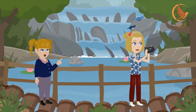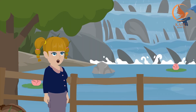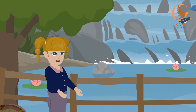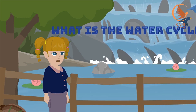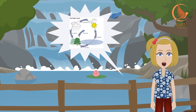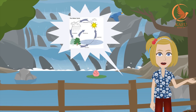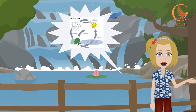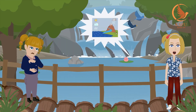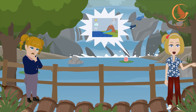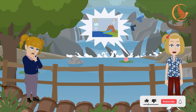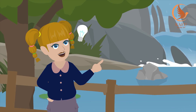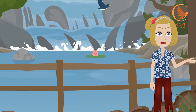Coco asks Mia: if rain is formed when water evaporates from rivers or oceans, does the amount of water decrease? Mia explains that the amount of water in oceans and rivers does not decrease because of the water cycle. Water evaporates from seas and oceans due to heat, rises into clouds, and then rain forms because of the cold weather.